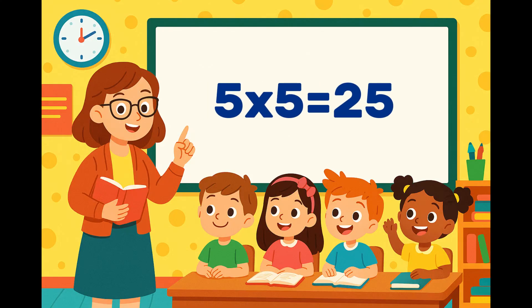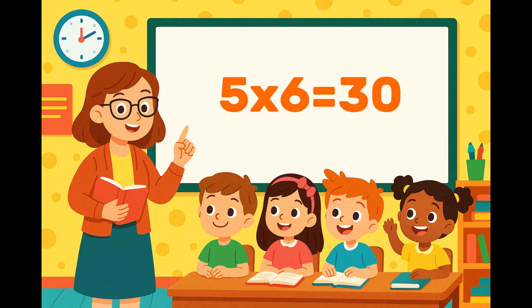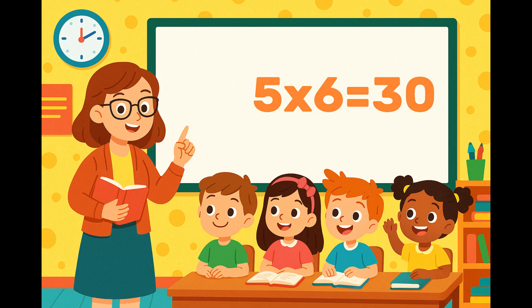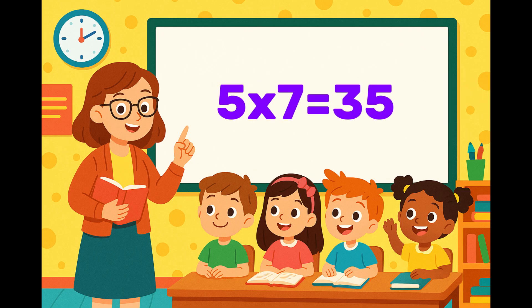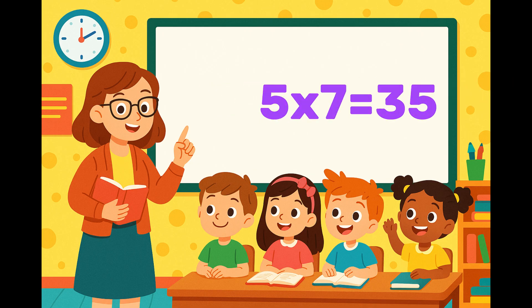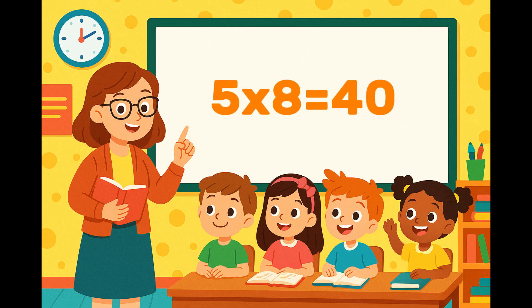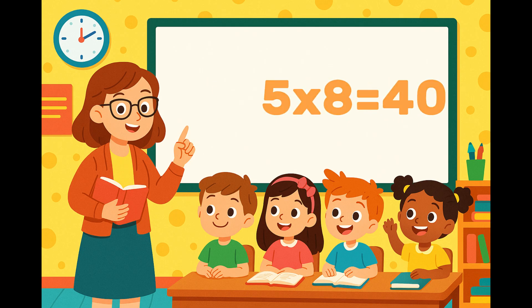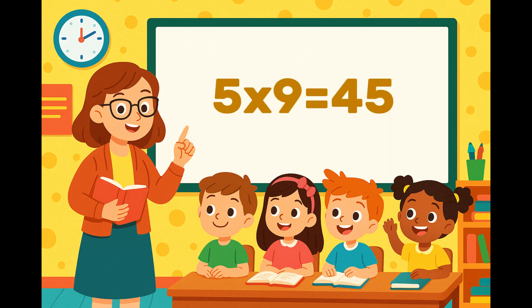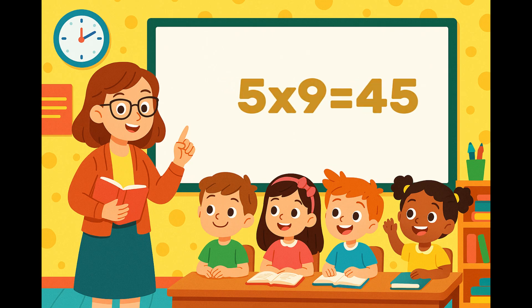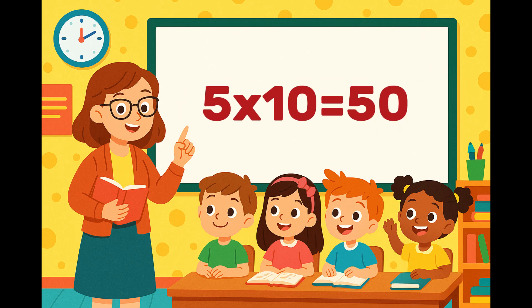Five Four's Are Twenty. Five Five's Are Twenty Five. Five Six's Are Thirty. Five Seven's Are Thirty Five. Five Eight's Are Forty. Five Nine's Are Forty Five. Five Ten's Are Fifty.